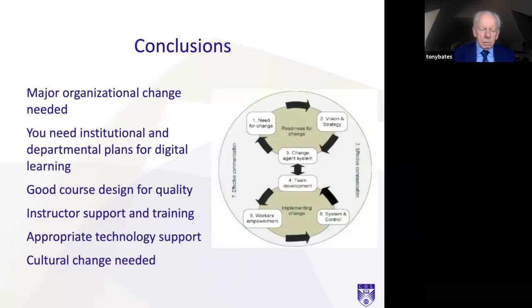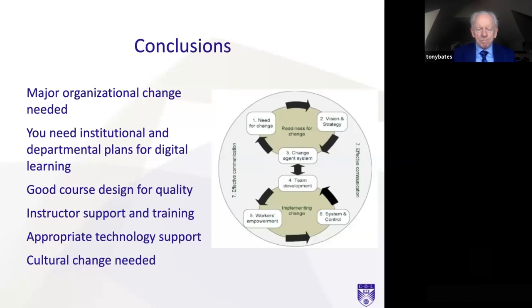In conclusion, if you're going to move to blended, hybrid, or online learning, it's a major organizational change. You need institutional and departmental plans for digital learning, good course design for quality learning, sufficient instructor support and training, appropriate technology support, and a change in culture generally. For more information, it's available in the book — particularly chapter 13. The next video will be on understanding the learners.